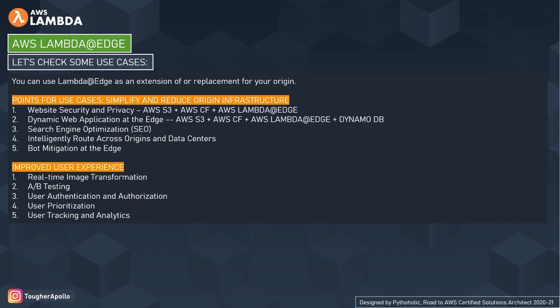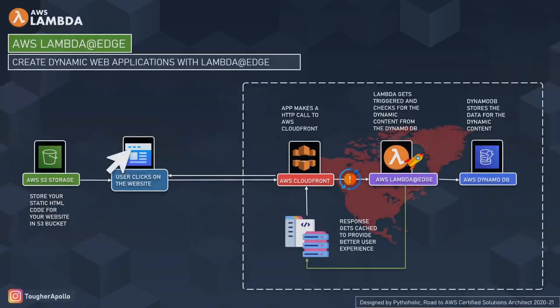Let's check an application design with AWS Lambda at Edge. The requirement is to provide dynamic content to users across several regions, reducing latency and improving overall user experience. For the user interface, static HTML is placed in an S3 bucket. The CDN is hosted in the US region and configured with Lambda at Edge, which pulls data from DynamoDB to format the website page with dynamic content for users in North America.